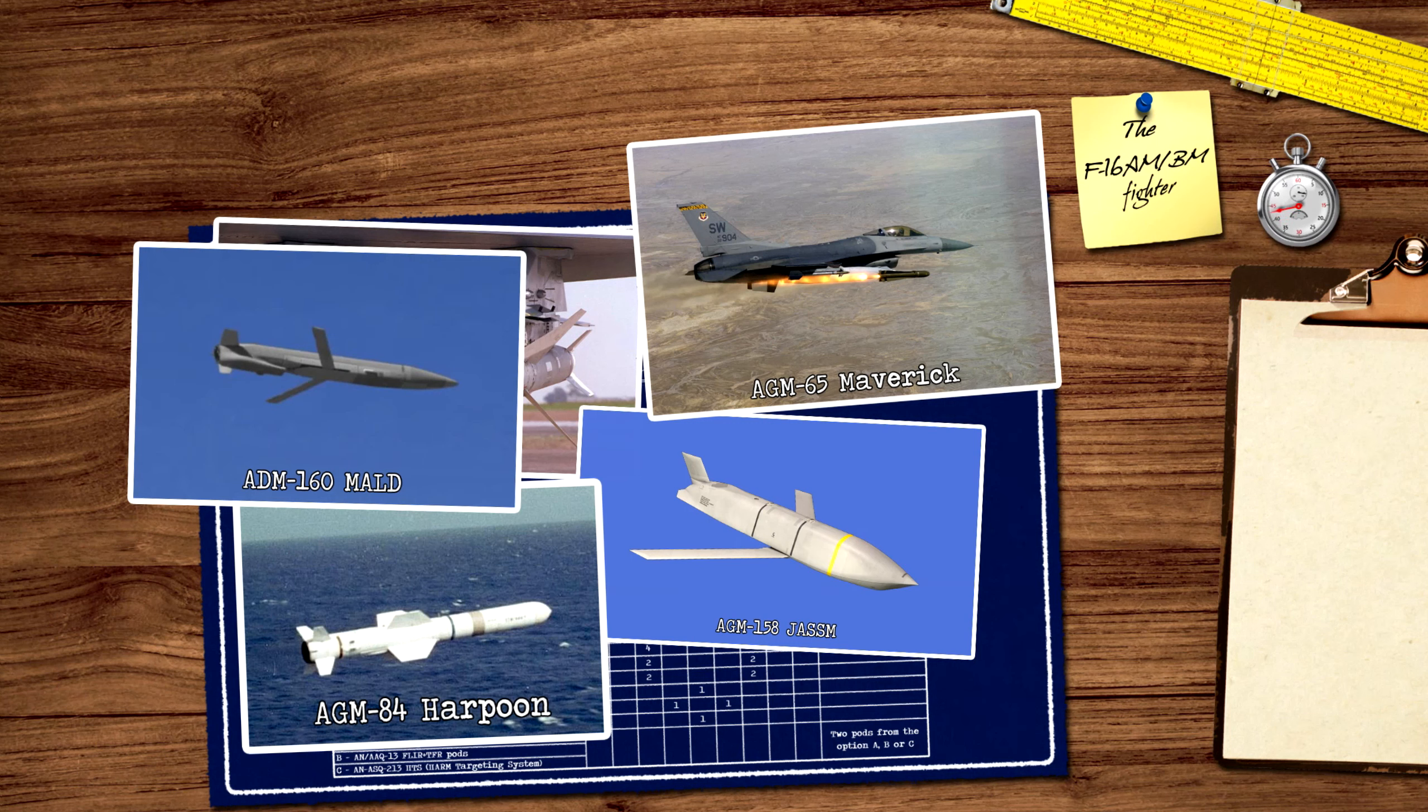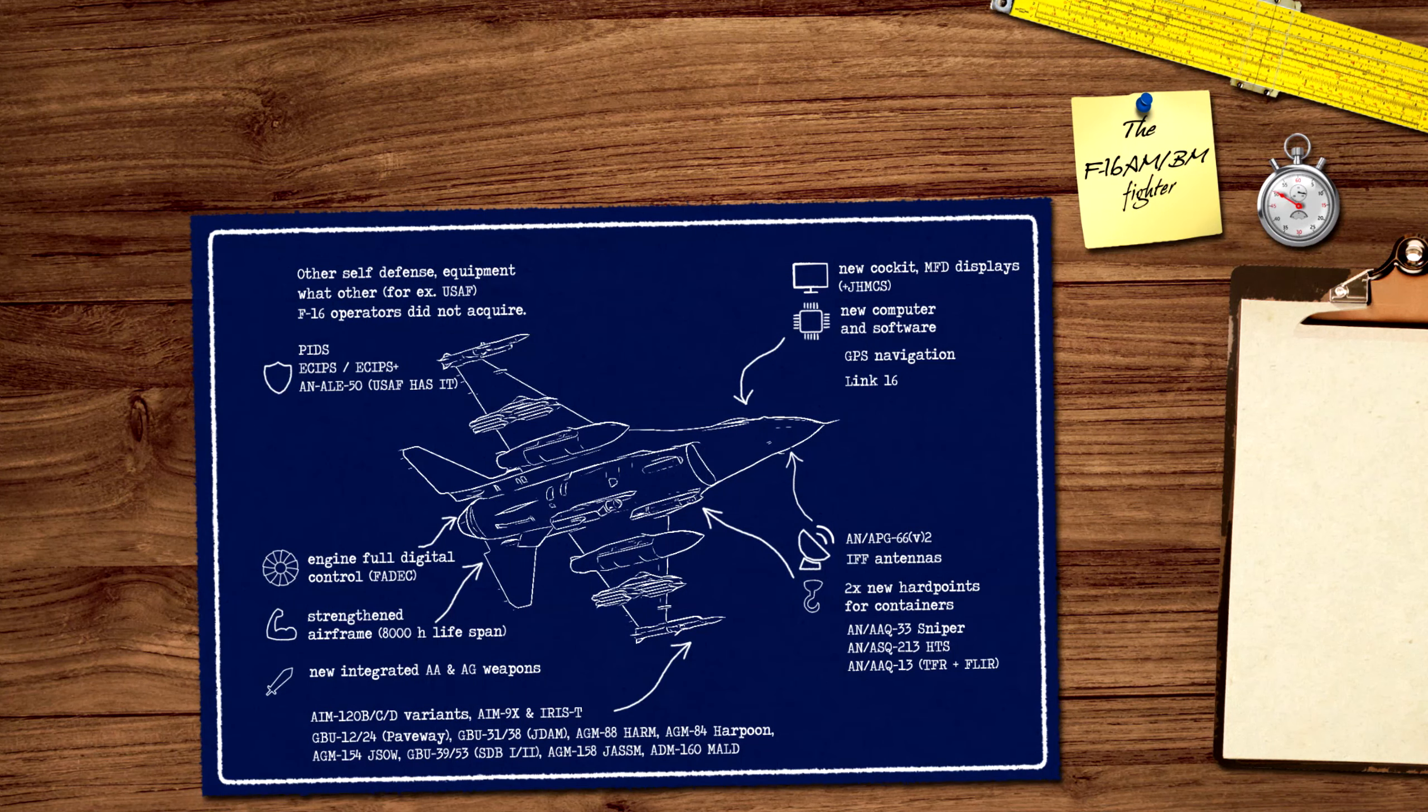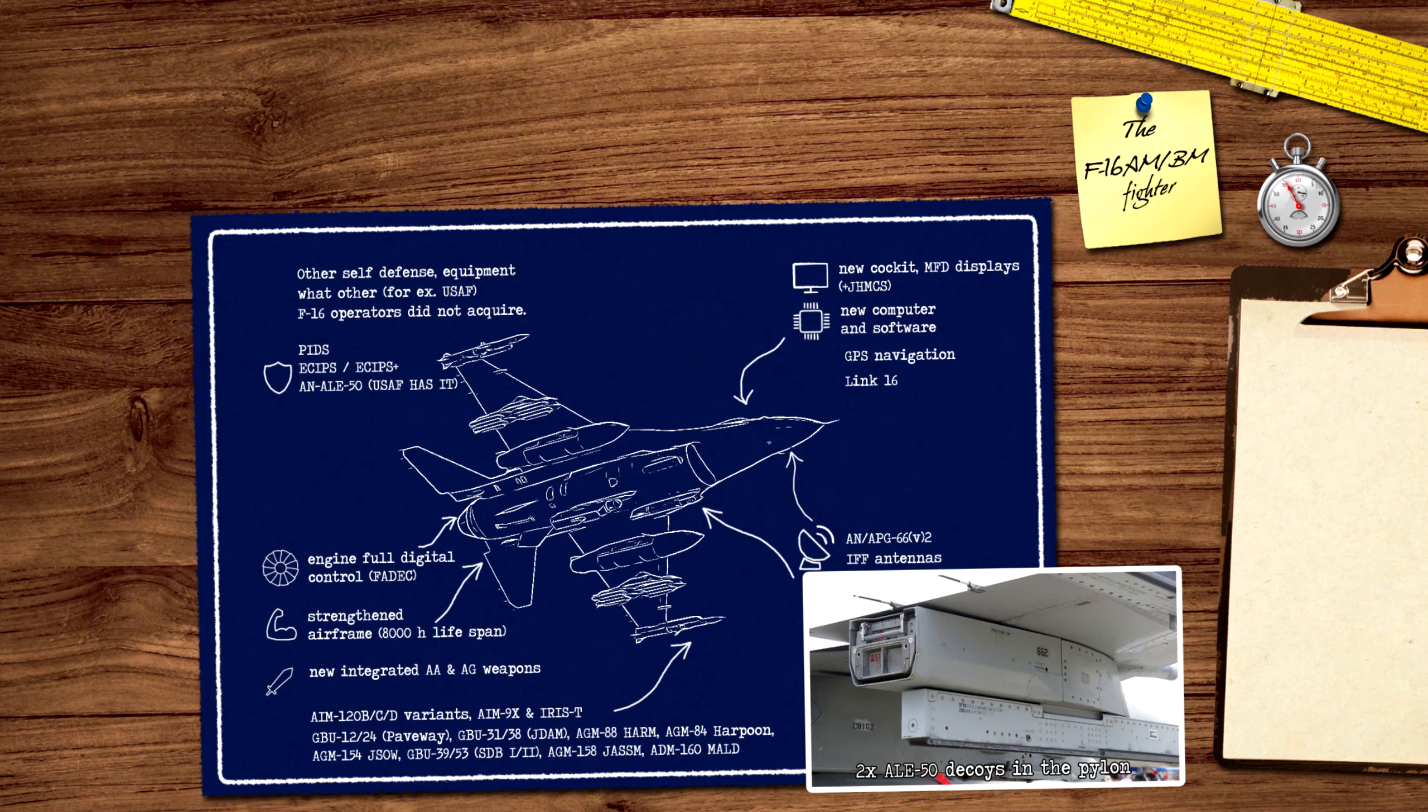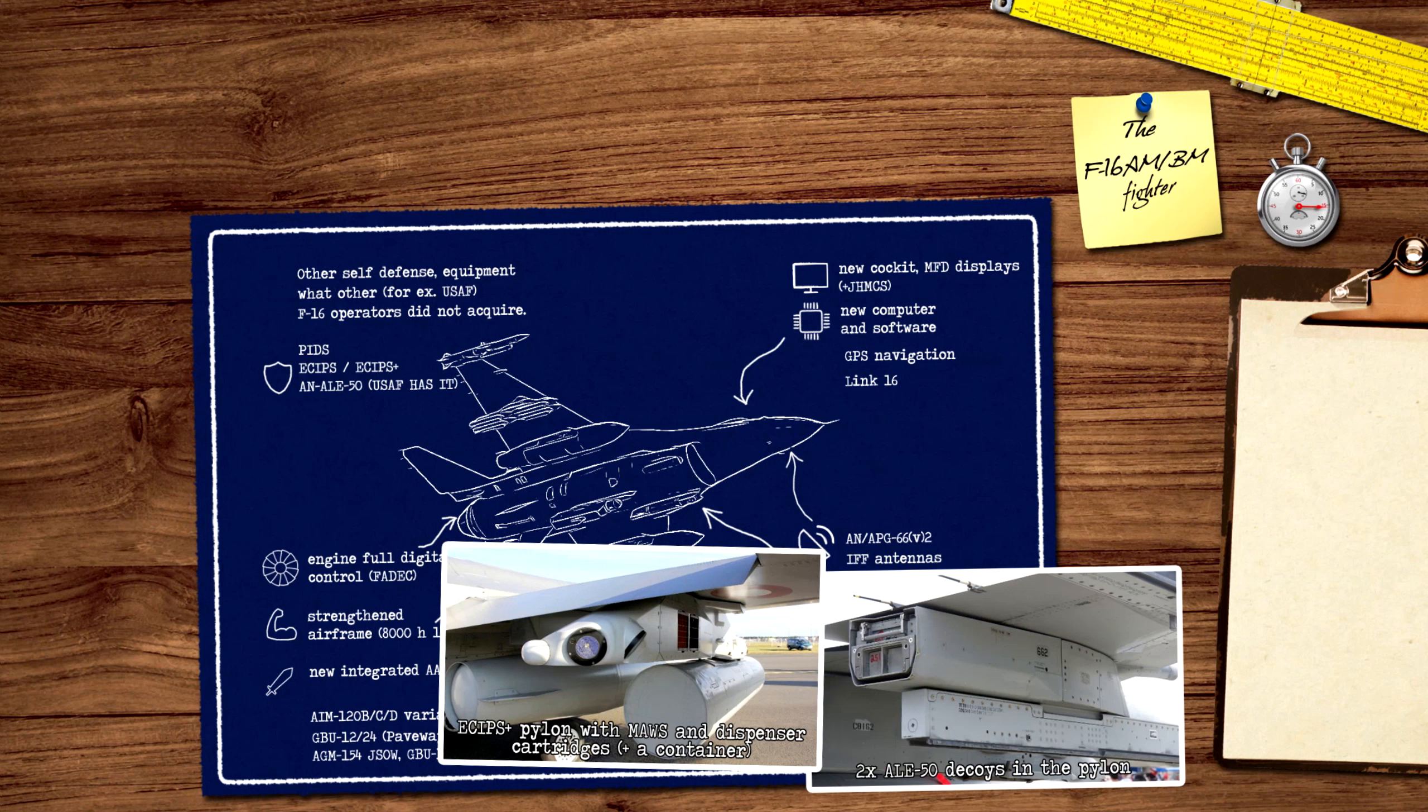Likely the most important upgrade in self-defense capability is the AN/ALE-50 towed decoys, which are integrated into the pylons above the AMRAAM missile on the 2 and 8 hardpoints. It could be effective against Russian radar-guided missiles. Some European countries integrated special pylons, which the United States Air Force did not. Against modern radar-controlled SAMs, the chaff is obsolete. Having more flares is meaningless because of the general tactical situation. Close combat is simply not expected.